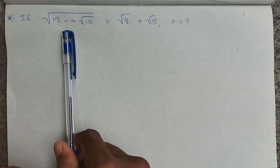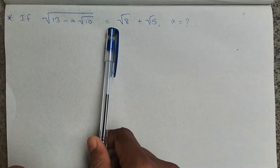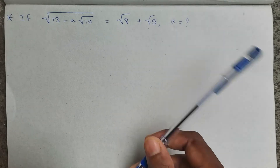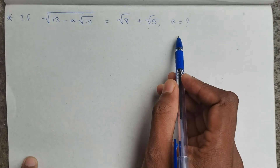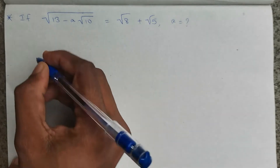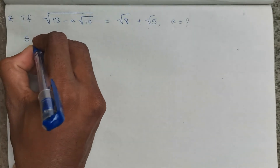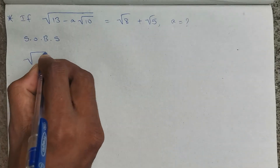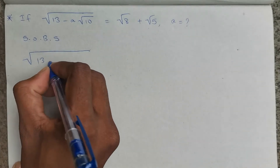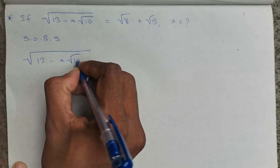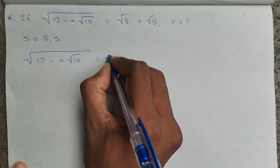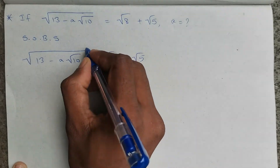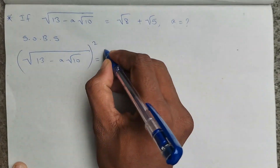If √(13 − a√10) = √8 + √5, then find the value of a. To solve this, I will do squaring on both sides: √(13 − a√10) = √8 + √5 is the given question, so I am doing squaring on both sides.